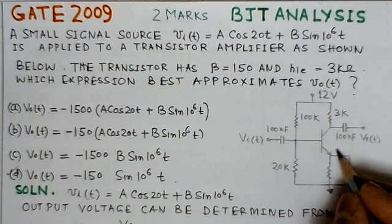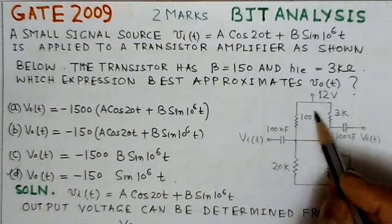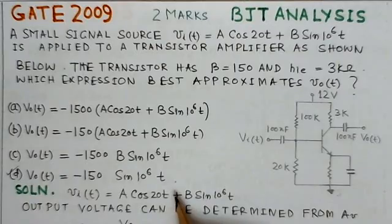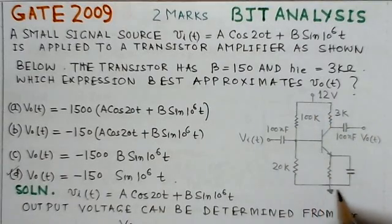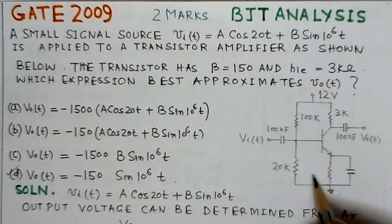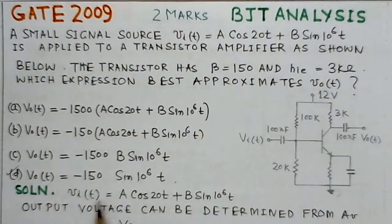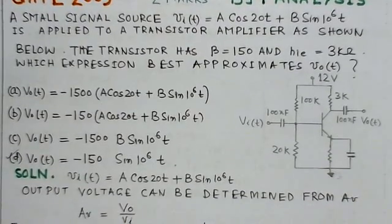The third point is that we have to find the expression for the output which best describes these values. To find the output when the corresponding common emitter amplifier circuit is given, the best way is through the gain of the amplifier. Using the gain formula, you can determine the output voltage. So let us start with the solution to this problem.